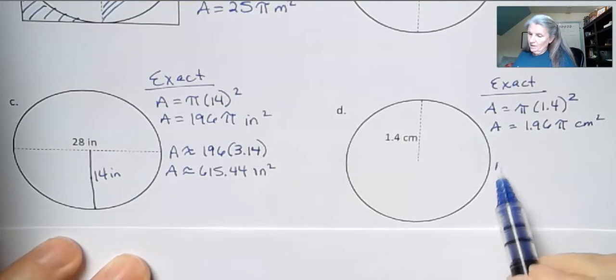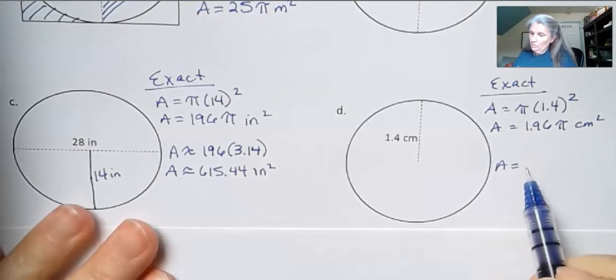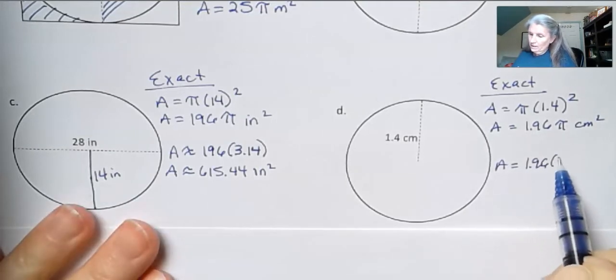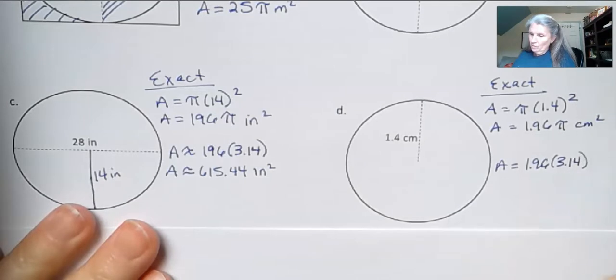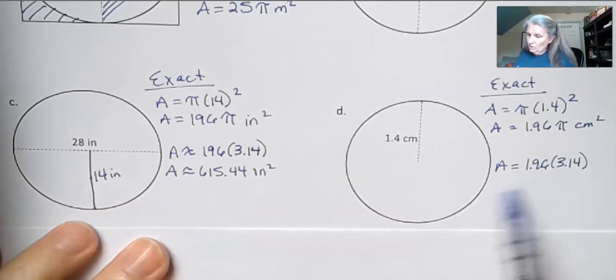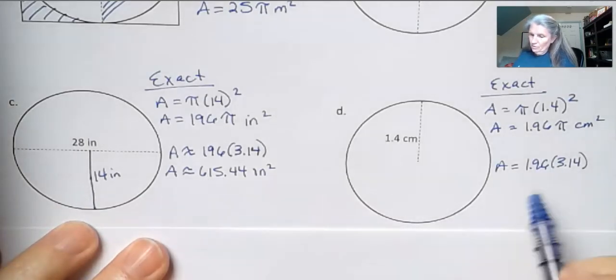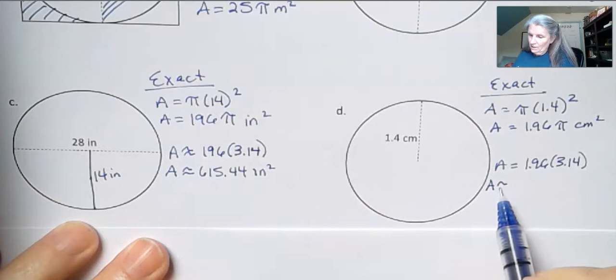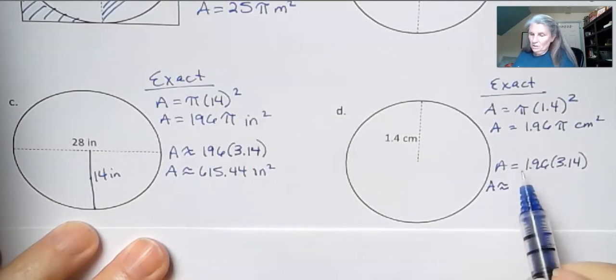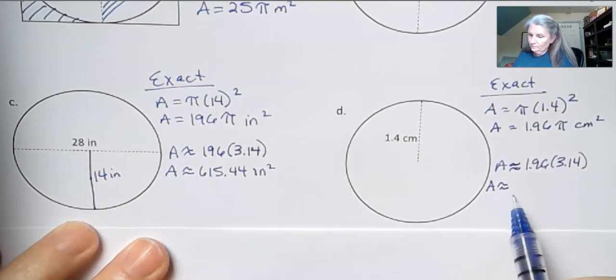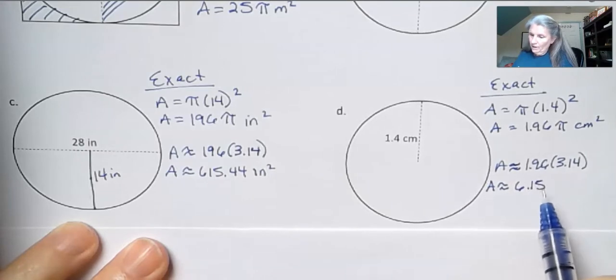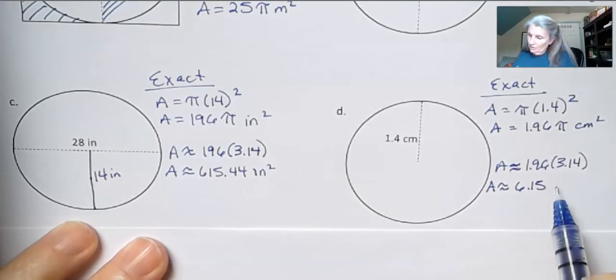And my approximation then would be 1.96 times 3.14. You see how we're two decimal places different because it was two dimensional there. And so it's two decimal places different. If I move that over two places, I should see 6.15 centimeters squared.